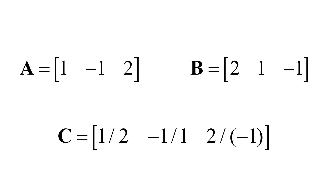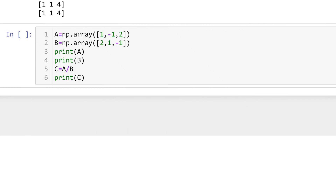We have two row vectors A and B, and we would like to create a new row vector C by having element-by-element division. For example, the first element of C, one half, comes from 1 divided by 2, and the second element minus 1 comes from minus 1 divided by 1. The third element comes from 2 divided by minus 1. To create row vector C, you can create two row vectors A and B, then type C equals A slash B.